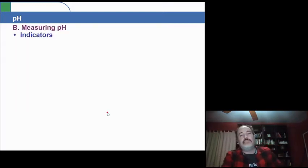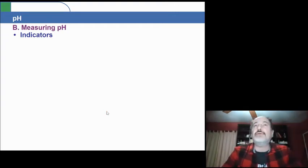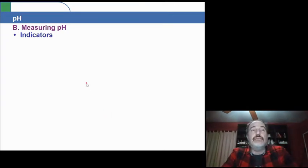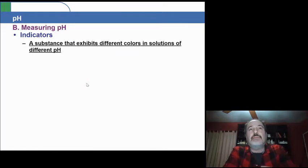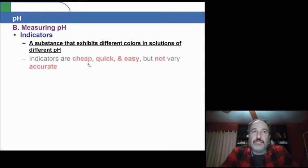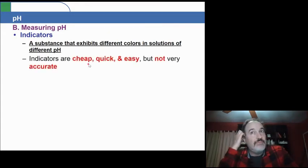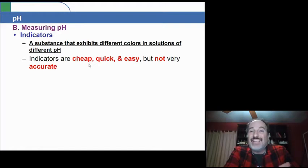Now, pH itself is measured in two primary ways. One way is with the use of indicators. An indicator is a substance that exhibits different colors in solutions of different pH. The benefits of indicators is that they're cheap, very quick to use and very easy to use. They're inexpensive, fast to use and easy, but they're not the most accurate. They can't give you very precise numbers.